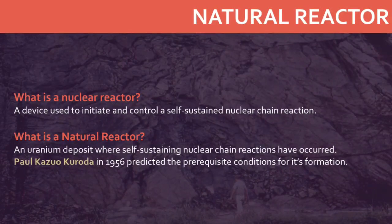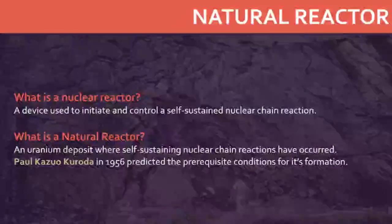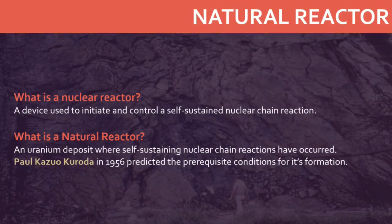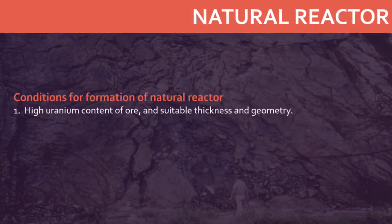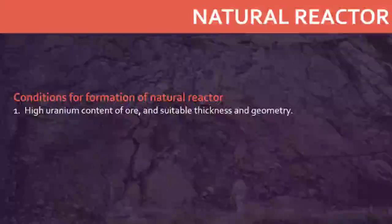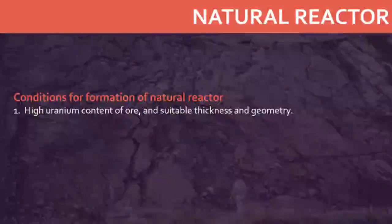The conditions under which a natural nuclear reactor could exist had been predicted in 1956 by Paul Kazuo Kuroda. The first of the four conditions given by him was that the natural uranium ore must have a high uranium content, must have a thickness of at least two-thirds of a meter, and a geometry that increases the probability of spontaneous natural fission, inducing a self-sustaining fission reaction in uranium-235.